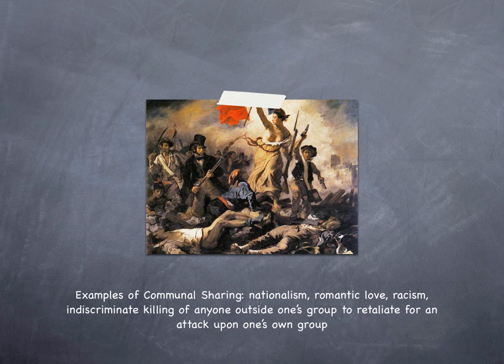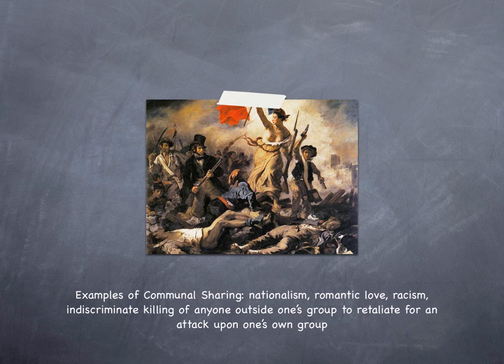Examples of communal sharing include nationalism, romantic love, racism, and indiscriminate killing of anyone outside one's group in retaliation for an attack. Decision-making structured by communal sharing works by consensus and seeks unanimity — such as decision-making within the Quaker church, where a decision is not accepted unless everyone accepts it. In each case, there's a strong sense of having something in common: ethnicity, citizenship, love, or shared substance.